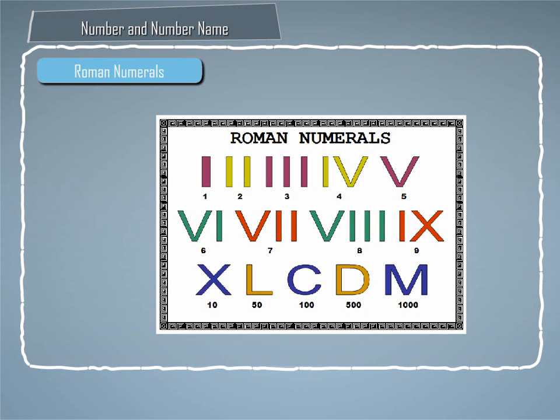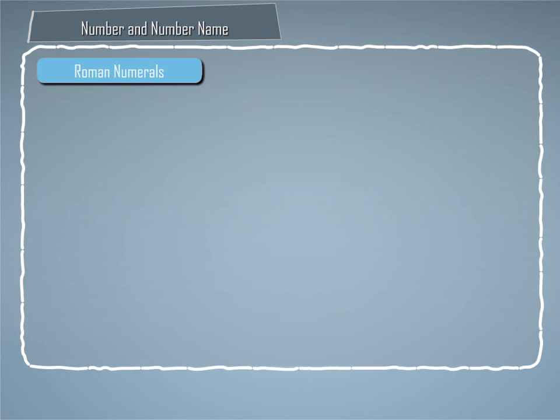Now we will learn about Roman numerals. There are seven basic numerals: I, V, X, L, C, D, and M, used by Romans to represent numbers.